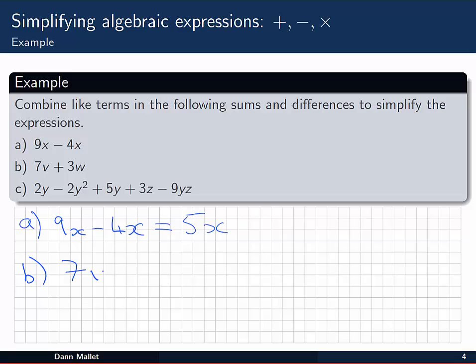In b we're asked to add 7v and 3w. We've got 7v and 3w. V and w are not the same thing, so these are non-like terms. We can't add them together, so that's as simple as it can be.